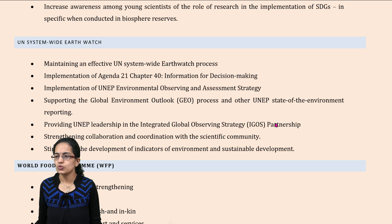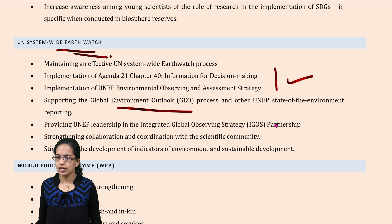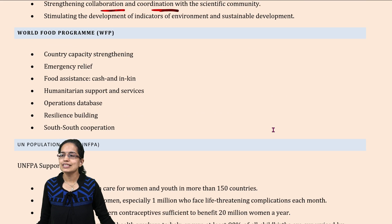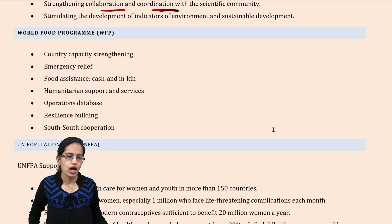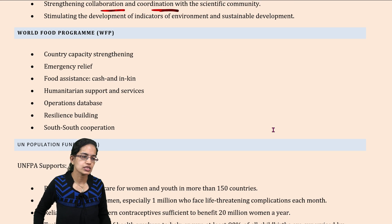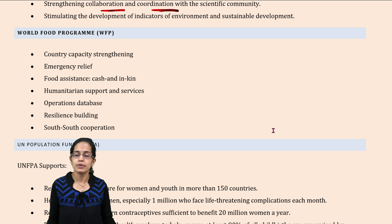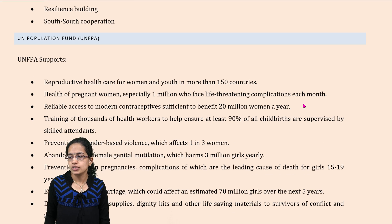The next is the UN System Wide Earth Watch, which focuses on supporting the global environmental outlook and strengthening collaborative coordinated efforts with the people. The next is the World Food Program, which focuses on emergency relief, providing cash or in-kind help for food assistance, and creating a resilient and strong network of database so that food availability is ensured for each and every citizen.